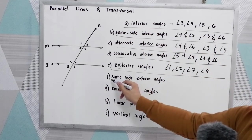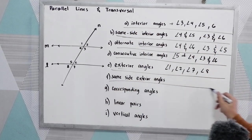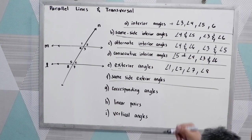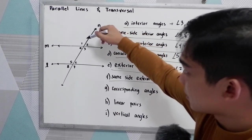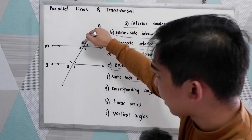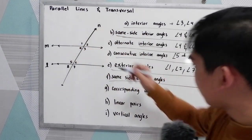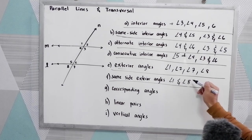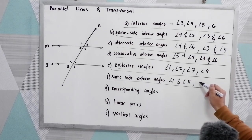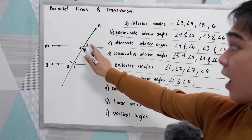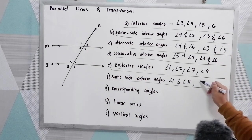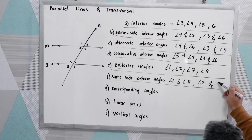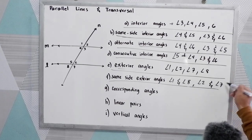Next, same side exterior angles. Same side exterior: we have angle 1 and angle 8, and angle 2 and angle 7.